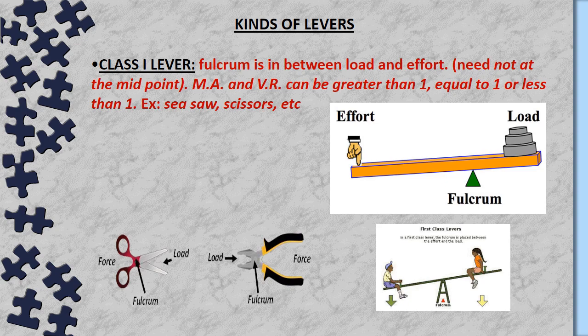In pliers, the handles are longer than the blades, so we apply effort on the handles. The effort arm is greater and the load arm is smaller, so mechanical advantage is greater than 1. In scissors, the blades are longer than the handles, meaning the load arm is greater than the effort arm, so mechanical advantage is less than 1. Therefore, the mechanical advantage of a Class 1 lever may be equal to 1, less than 1, or greater than 1.